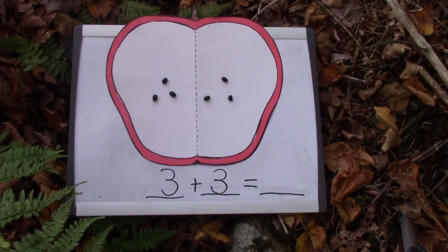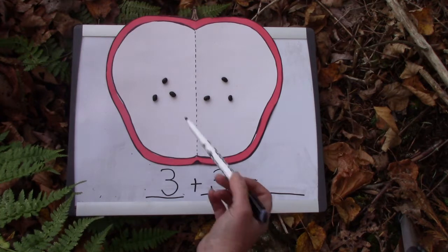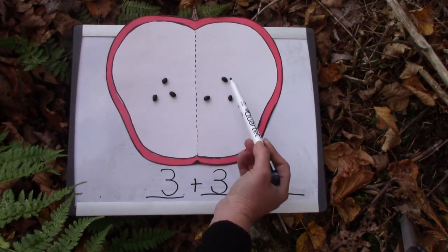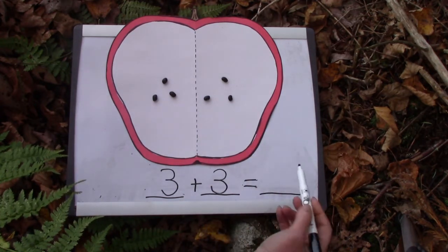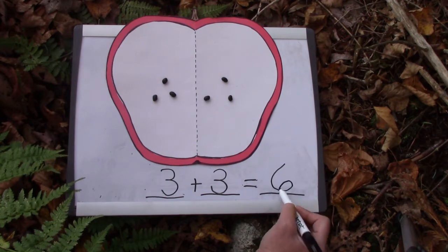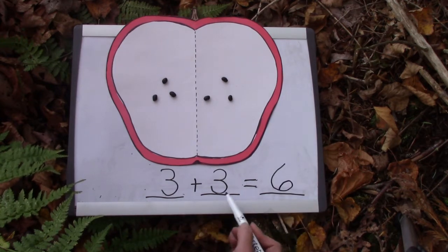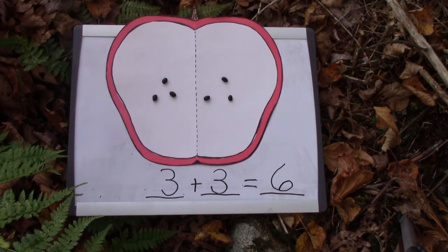The double line means equals. It means how many do we have all together? Three, four, five, six. Three plus three equals six. Three plus three equals six is a number sentence. Well look at that! That wasn't hard at all! Well done!